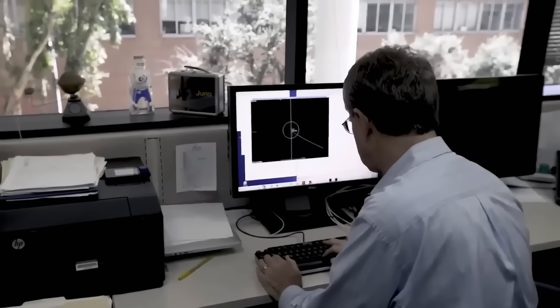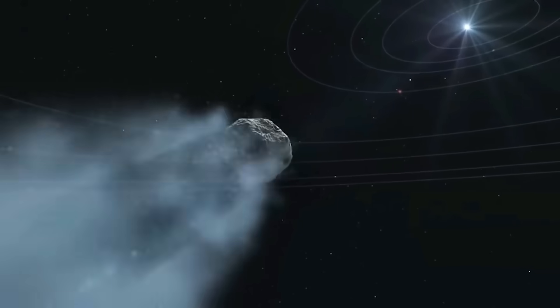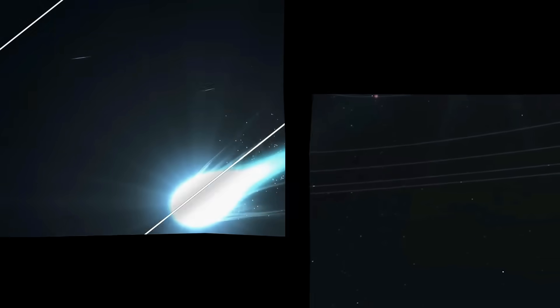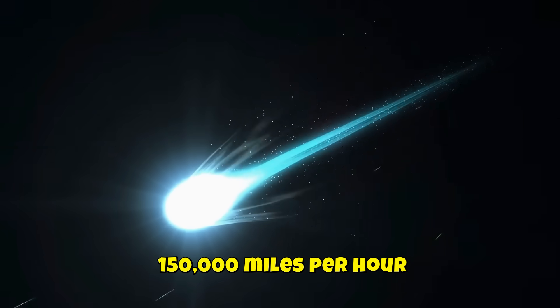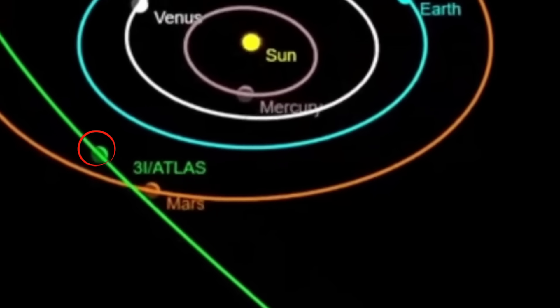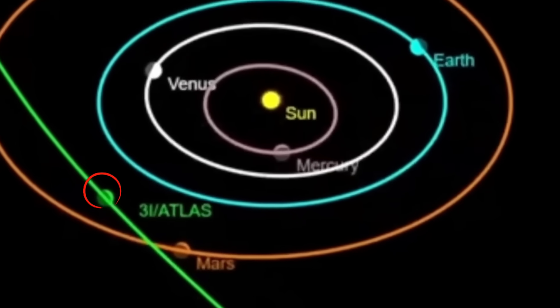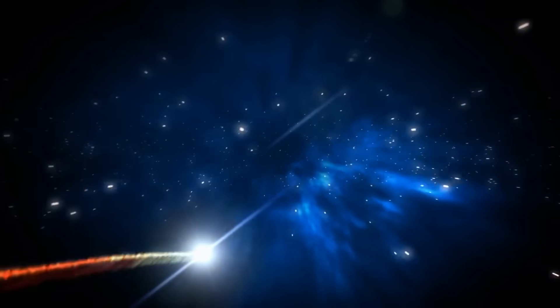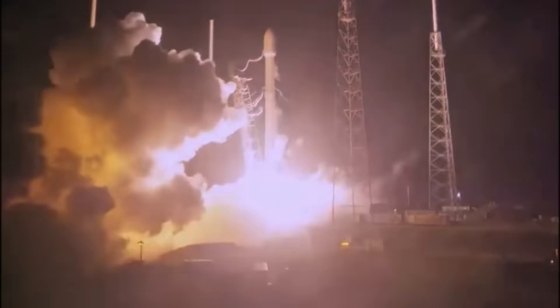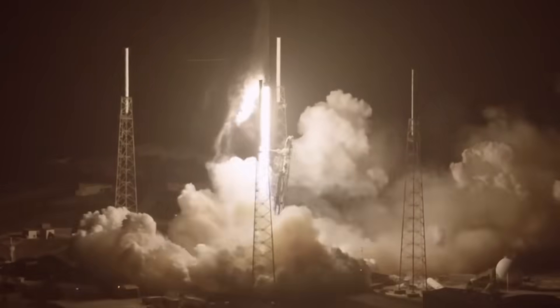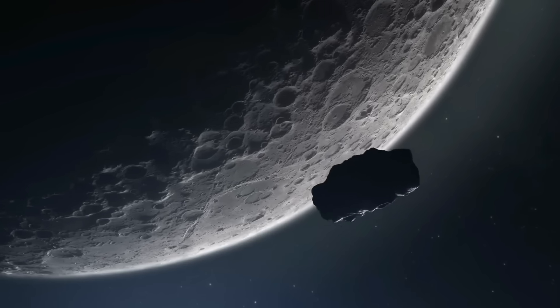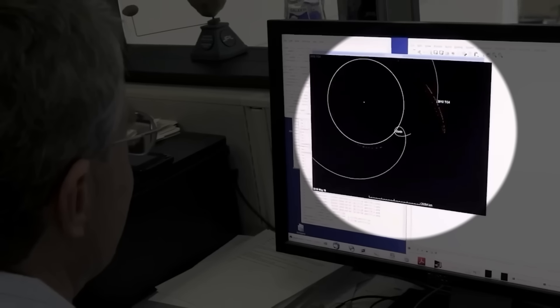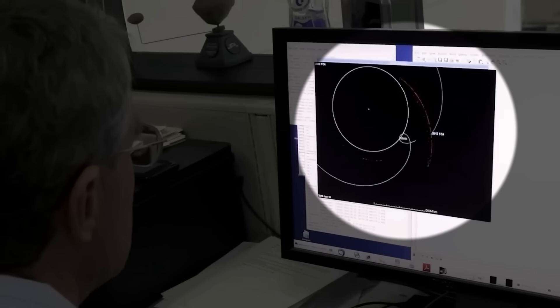Right now, as you're watching this, something extraordinary is racing through our solar system at over 150,000 miles per hour. It's called 3i/ATLAS, and it came from another star. But here's where things get wild - multiple sources claim SpaceX launched a Falcon 9 specifically to intercept this cosmic visitor. This isn't just about a comet.